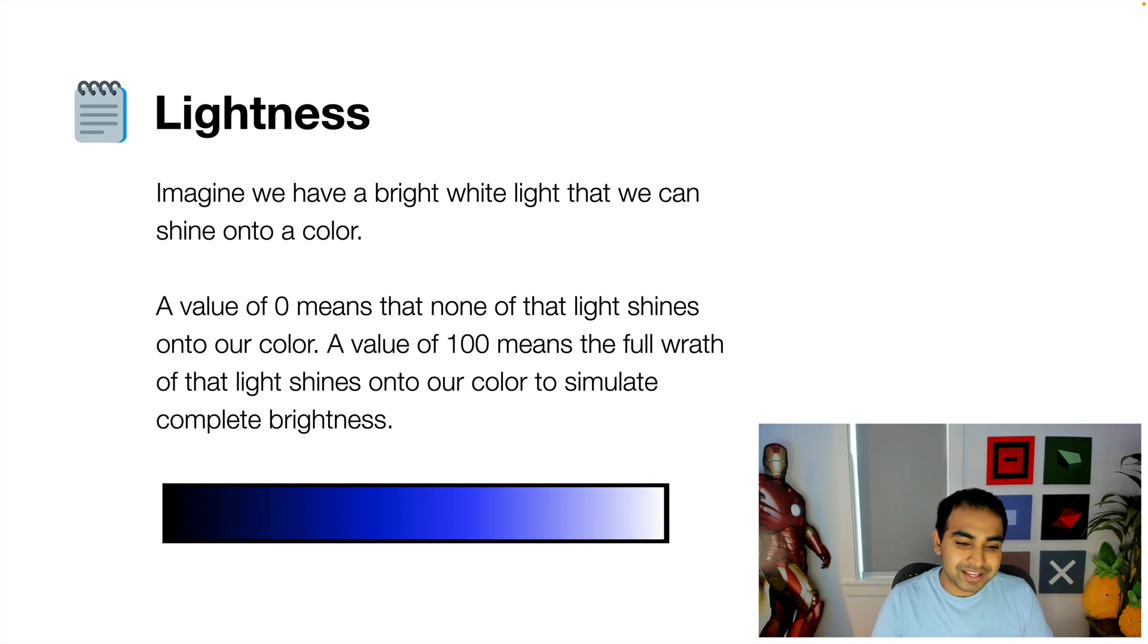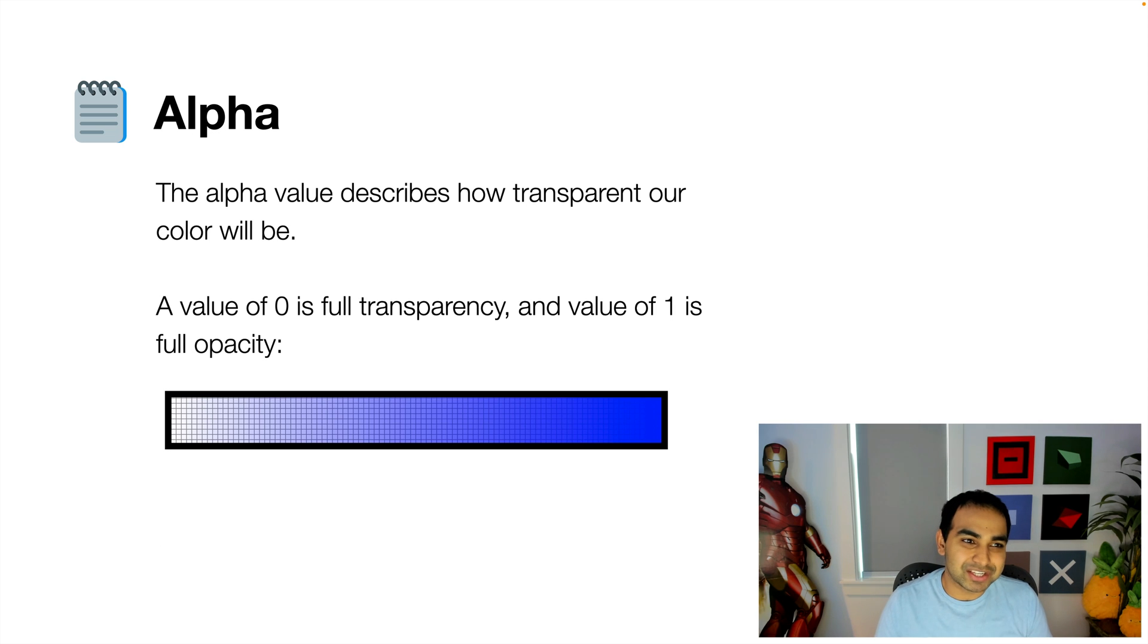So in order to have the color appear with a level of intensity that I think would be appropriate for us, we want to have the lightness be somewhere around the middle. Not quite zero, not quite 100, but somewhere closer to the 65, 70, 80 range.